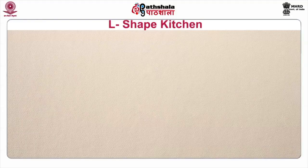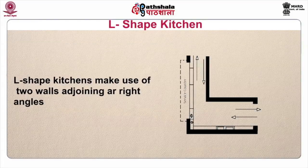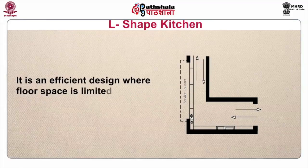L-shaped kitchens make use of two walls adjoining at right angles. It is an efficient design where floor space is limited. Extra space can be created by use of revolving shelves installed in a cabinet at the base of cooking and sink units. It is a very useful shape for small canteens, kiosks, and tea and coffee shops.